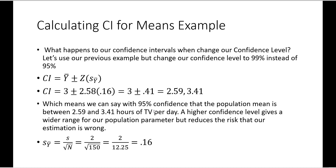A higher confidence level — going from 95% to 99% — gives us a wider range for our population parameter but reduces the risk that our estimate is wrong. If we are 99% confident, that means there's a 1% chance we are wrong. If we're using a 95% confidence level, there's a 5% chance we're wrong. When we say 95% confidence, that means there's a 5% chance that our population parameter falls outside — either larger or smaller than — our confidence interval.